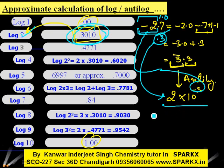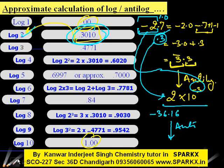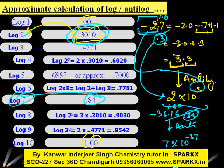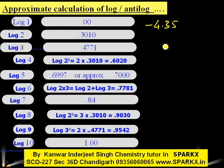Suppose we have −36.16. We can directly write the antilog as 10 to the power: increase the negative characteristic by 1 to get −37, and subtract 1 from 0.16 to get 0.84. The antilog of 0.84 is approximately 7. So the antilog of −36.16 is approximately 7×10^(−37).